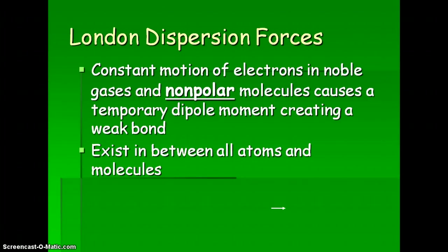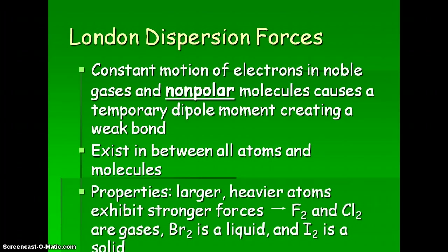London dispersion forces exist in all atoms and molecules, so every molecule always has them holding things together. If you have larger, heavier atoms, you're going to have stronger forces, because they have more mass. Looking at the halogens — fluorine, chlorine, bromine, and iodine — fluorine and chlorine are the lightest, so they don't have a strong attraction and are gases. Bromine is more massive, so there's more attraction and bromine is a liquid at room temperature. Iodine has the strongest attraction, so it's a solid.